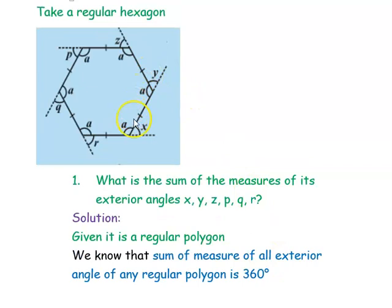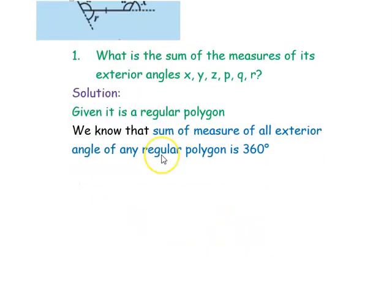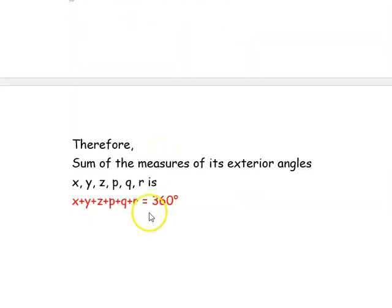Here the exterior angles are x, y, z, p, q, and r. The sum of all the exterior angles is equal to 360 degrees — that is the answer to the first part of this question.